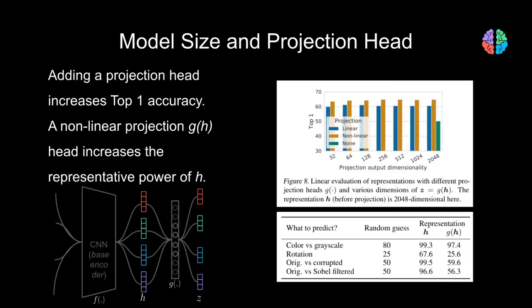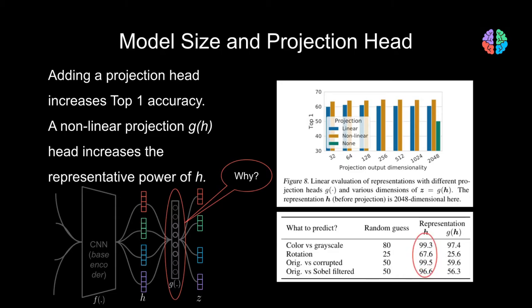Another natural question one can ask is: why use a projection head G at all? The answer is in the representative power of the output H when we have the projection head G following it. To prove this, they predict the input image augmentations using both representations H and Z. Clearly, the results with H are far better than with Z, proving that H has way better representations of the input image than Z. This is good for us, as we throw away G and Z and use only the network F after training in the contrastive learning setting.